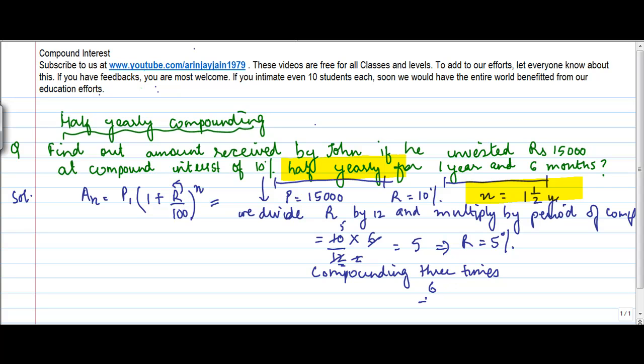Why? So first six months, I do the compounding once. Then at the end of 12th month, I do the compounding second. And at the 18th month, I do the compounding third. And 18th month is basically equal to one and a half year. So n in this case will become three.